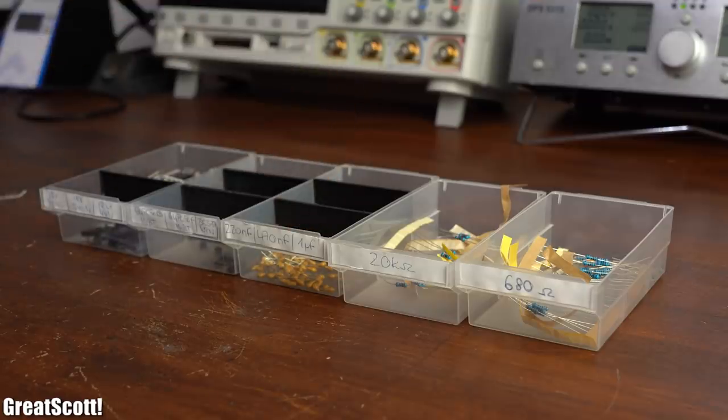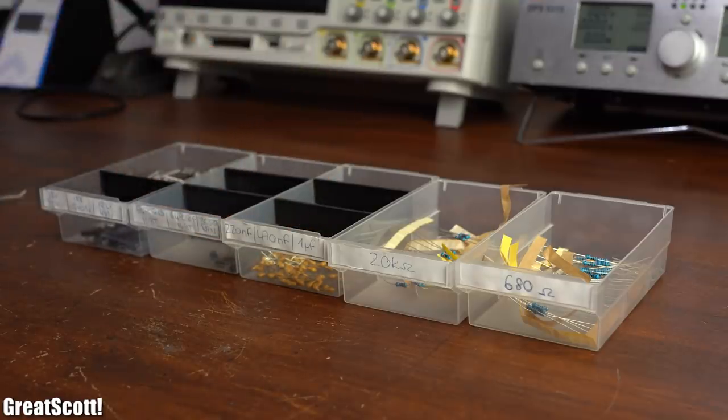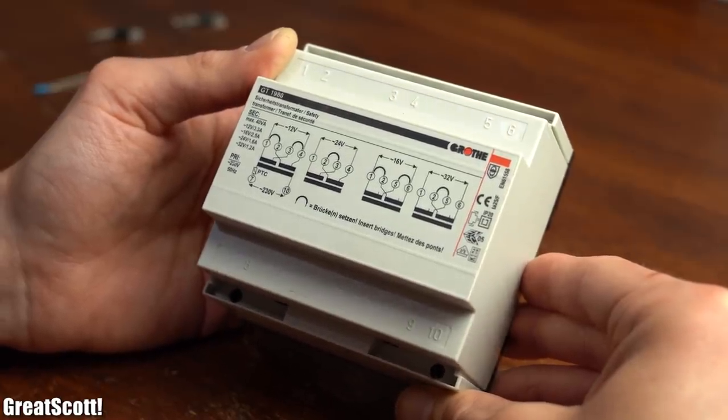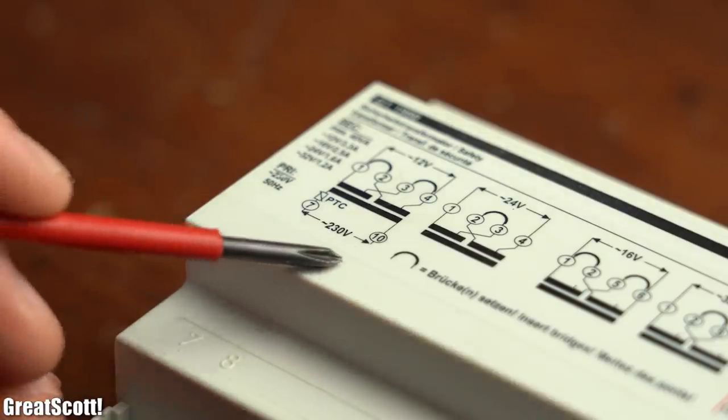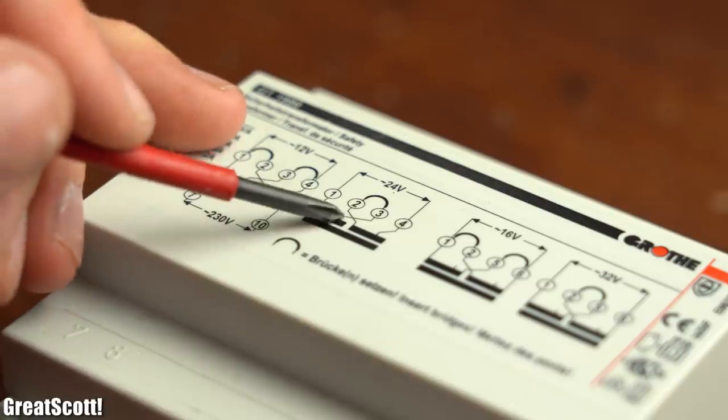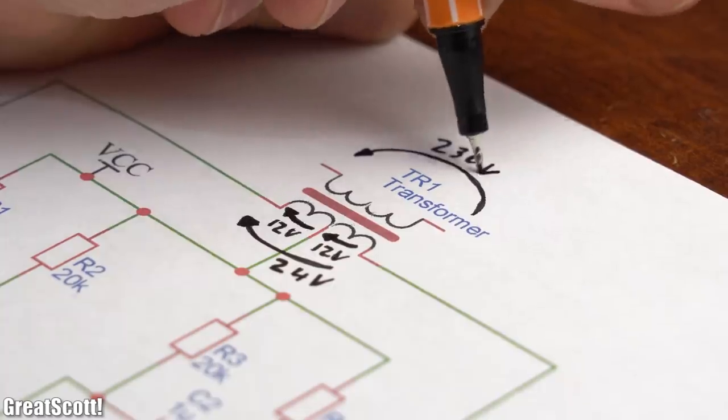And with that being said, I gathered all the components mandatory for the circuits. For the transformer parts, I went with the safety transformer that comes with a 230V winding as well as a 24V winding that I can center tap, and thus the transformer should be suitable for the circuits.